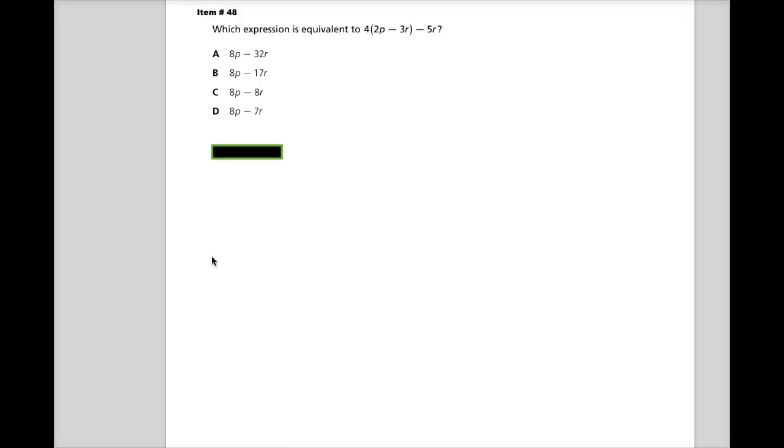This is item number 48 for the Tennessee end of course Spring 2014 test release for Algebra 1. The question says which expression is equivalent to 4 times the quantity 2p minus 3r minus 5r. Basically, they just want you to simplify this to get a single answer.